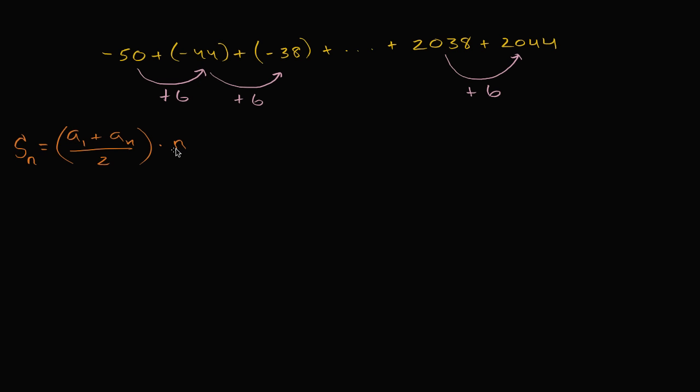So over here, we know what our first and last terms are. We know this right over here, that is a one. And this is our last term, 2044, so that is our a sub n. So the other question is, what is n? How many terms do we actually deal with?